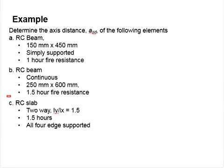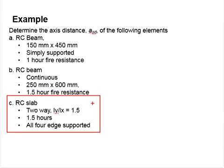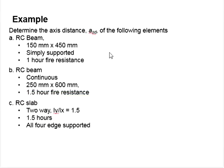The third one is a slab — a two-way slab. The LY per LX is equal to 1.5, and it is meant to resist fire for 1.5 hours. All four edges are supported, which means it is an internal slab.